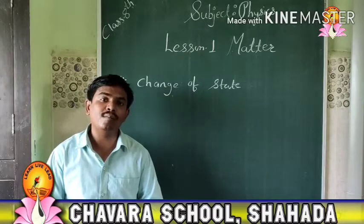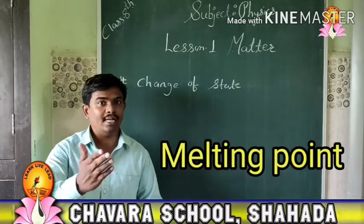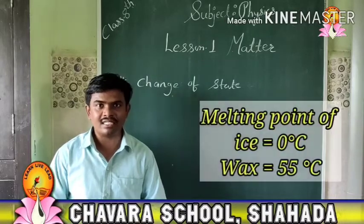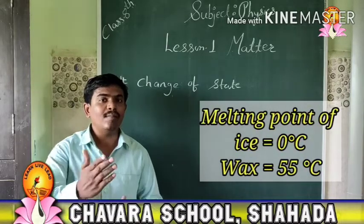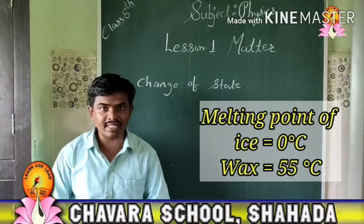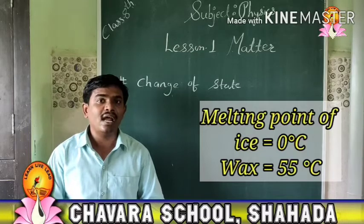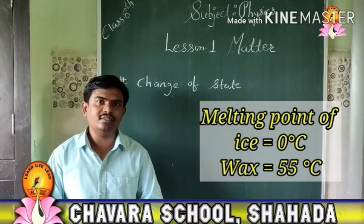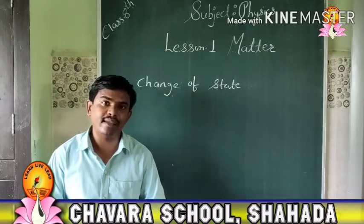The melting point of ice is 0 degree Celsius, at which the solid changes to liquid state without further increase in temperature.